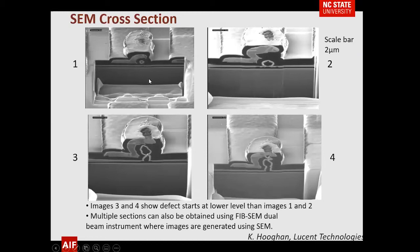Going back to a semiconductor example, this will lead us into why you have a dual beam instrument. This particular feature has been cut into, and you say, 'I know where the problem is, right here.' But if you go back in the process to this layer and cut further in, in images three and four you now see that this particular problem is occurring at a much earlier level.